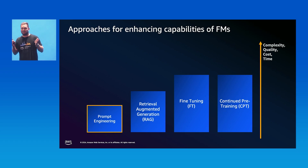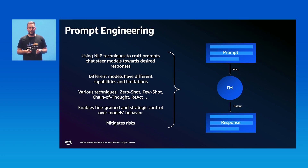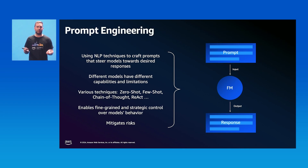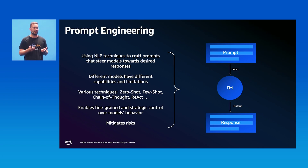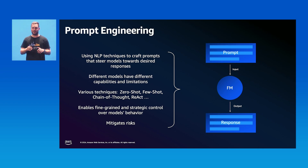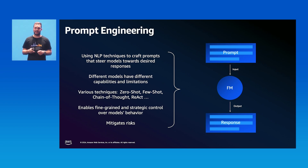I want to start with prompt engineering — something you've probably done excessively already in experimental setups. Prompt engineering is a technique that optimizes the model input, which we call the prompt, in order to maximize the model output, the response. It's very model-specific: a prompt that works well with one model may not work with another. Common patterns include few-shot prompting and recursive techniques like chain-of-thought or ReAct. We can also use prompt engineering to build guardrails — instructing the model to gain fine-grained strategic control over how it behaves, mitigating risks like harmful behavior.